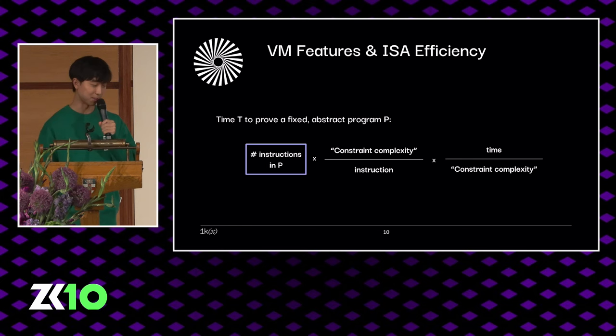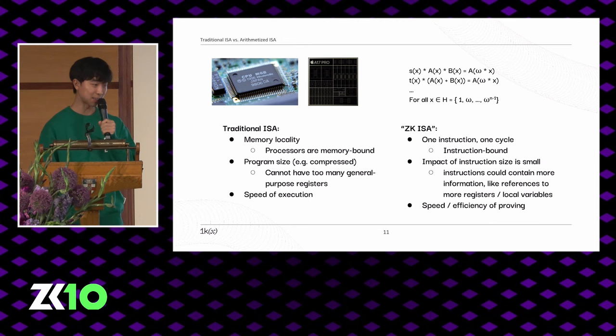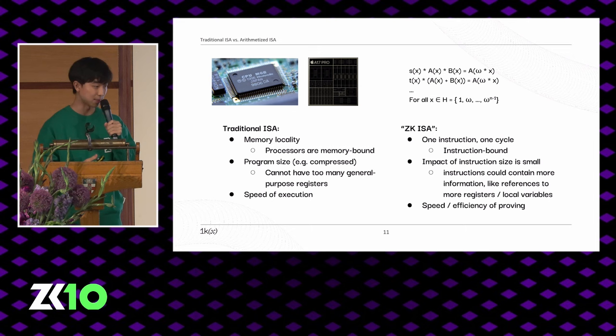Traditional ISAs and ZK ISAs optimize for different things. Traditional processors are memory bound, but ZK ISAs generally have one cycle per instruction, so they tend to be instruction bound.